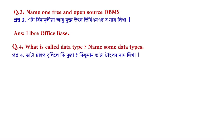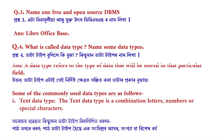Question number 4: What is called a data type? Name some data types. Answer: A data type refers to the type of data that will be stored in a particular field. Some of the commonly used data types are as follows. Text data type: The text data type is a combination of letters, numbers, or special characters.